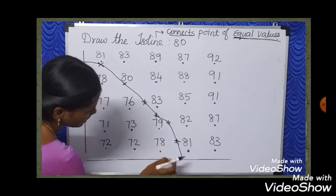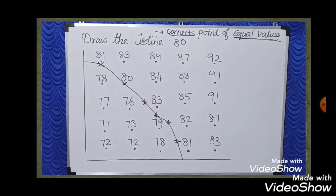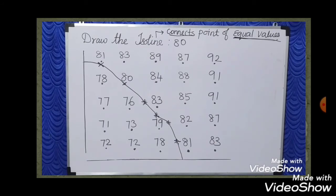So this is the Isoline Map — representing rainfall, temperature, and all of these elements. There are many categories of isolines, like isotherms, isobars, isohyets, and isohels.